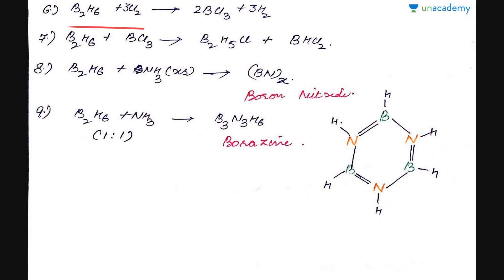Next, on treatment with chlorine it forms boron trichloride plus hydrogen gas is released. On treatment with excess BCl3, boron trichloride with diborane forms B2H5Cl plus BHCl2 unit. B2H6 on treatment with excess ammonia forms BN, boron nitride. Secondly, when diborane is treated with ammonia in a ratio of 1 to 1, we get a compound with general formula B3N3H6 which is known as borazine. The structure of borazine has a similar structure to benzene and is also known as inorganic benzene. It consists of alternate BN double bonds where each boron and nitrogen has one hydrogen atom.